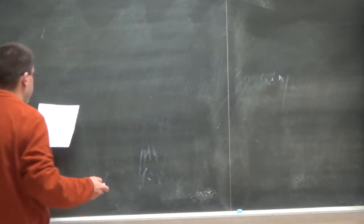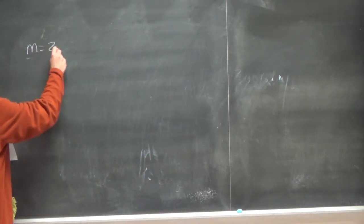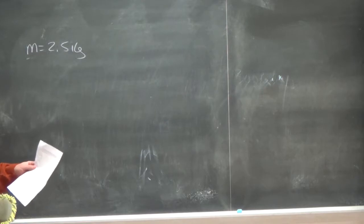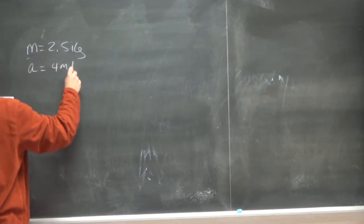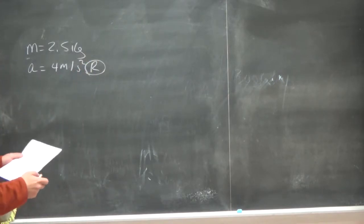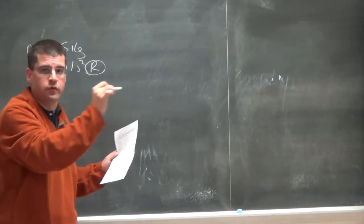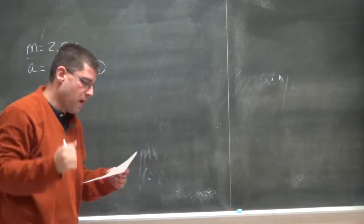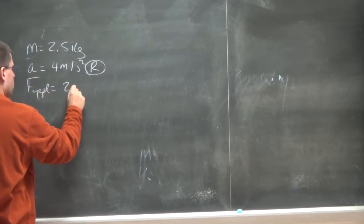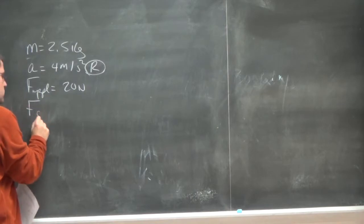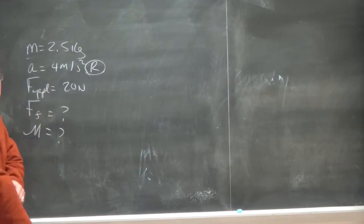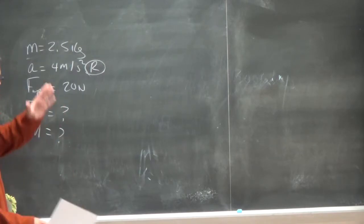So it says a 2.5 kilogram object, so we know kilograms is a unit per mass. So we're going to write down 2.5 kilograms. It's accelerating 4 meters per second rightward, so positive acceleration rightward. Pulled horizontally, so it looks like we're going to analyze the X forces, the forces in the X direction. Looks like Y forces could be balanced. We want a table with an applied force of 20 newtons. So we need to determine the force of friction. We also need to determine mu, the coefficient of friction.